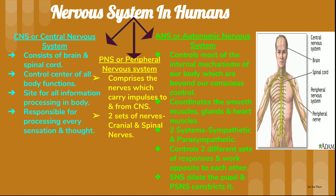The peripheral nervous system comprises the nerves which carry impulses to and from the CNS — that is, to the brain or the spinal cord — and also the nerves which carry responses from the central nervous system to the affected organs or muscles which will act accordingly. There are two sets of nerves, cranial and spinal nerves, for this peripheral nervous system.